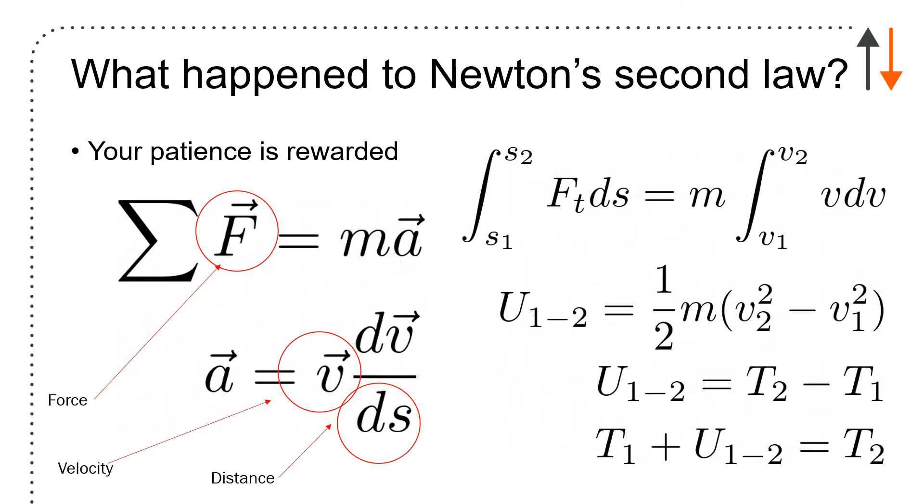If I do the integration, all of my force is tangential in some path S1 to S2, equals mass times the integral V1 to V2 of v dv. That's kind of neat. I end up with a term that looks like this: 1/2 m V2 squared minus 1/2 m V1 squared. I'm going to call that T. That T is kinetic energy, and it's equal to 1/2 m V squared. If I bring over my initial condition to the left-hand side, T1 plus work 1 to 2 equals T2.